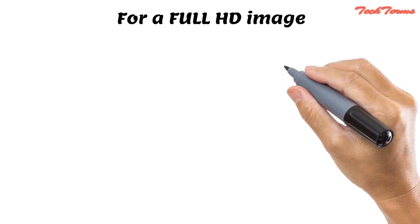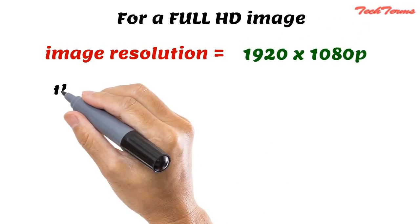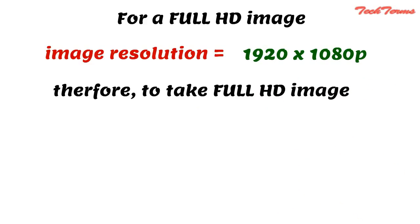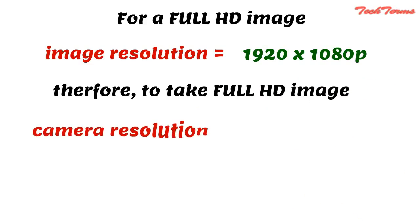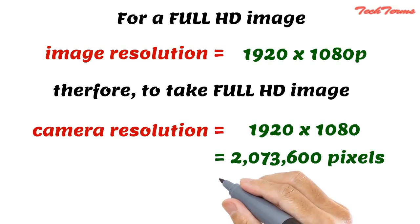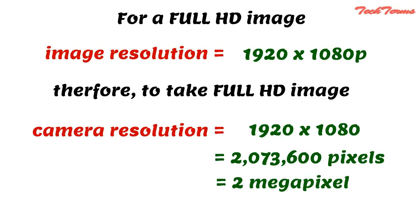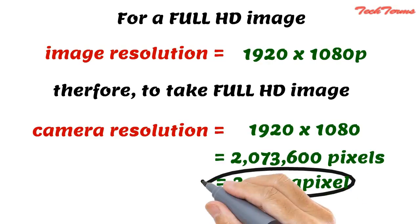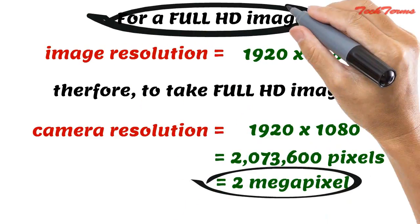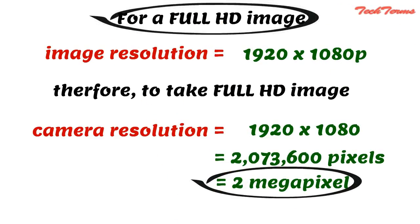For a full HD image, the image resolution is 1920 x 1080 pixels. Therefore, to take a full HD image, the camera resolution should be approximately 2 million pixels, or simply 2 megapixel. Therefore, a 2 megapixel camera is enough to take full HD photos on your smartphone.